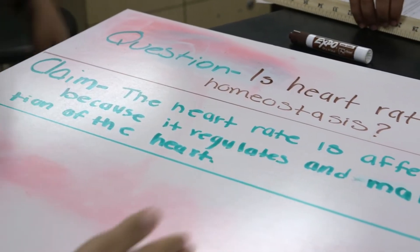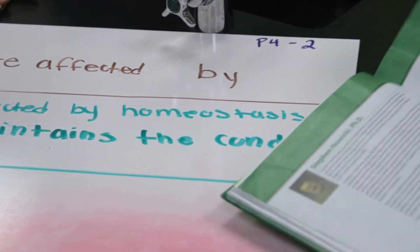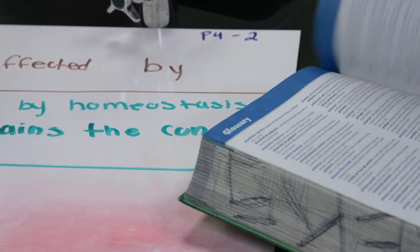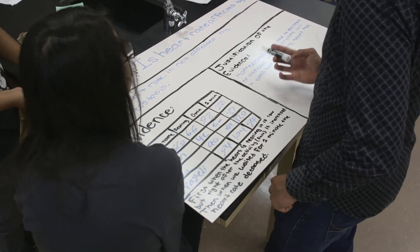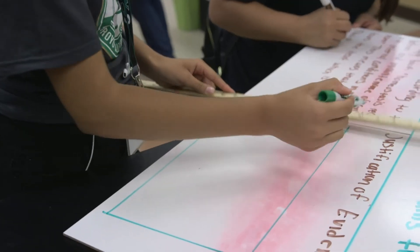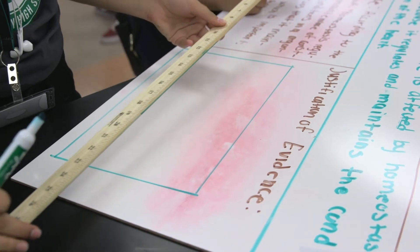The graphic organizers from day one used the same organization on the whiteboard. At the top was their guiding question — 'Does heart rate affect homeostasis?' — and underneath went their claim, simply answering whether they thought homeostasis affected heart rate. The bottom half was split between evidence on one side and reasoning with scientific justification on the other. The wonderful thing about whiteboards is you can make changes — this is all about growth, not perfection, and I want students to grow through the process.